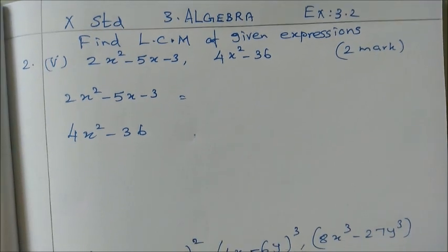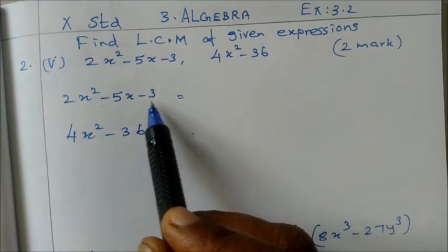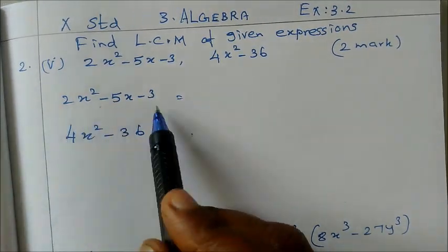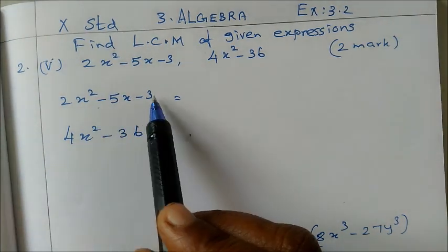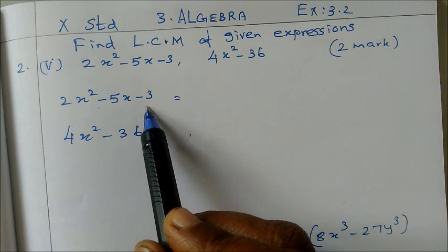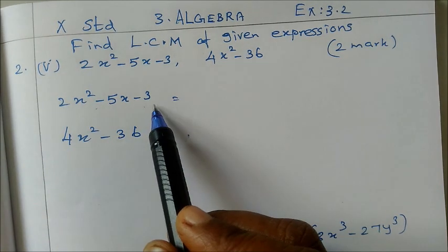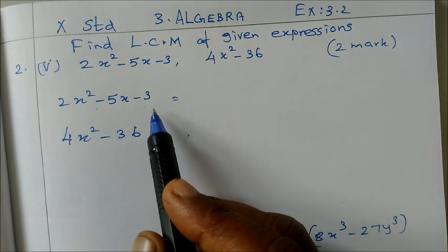These are 2 marks problems. 2x squared minus 5x minus 3. First, what do we know? This is a quadratic expression. Equals are for equations, this is an expression.